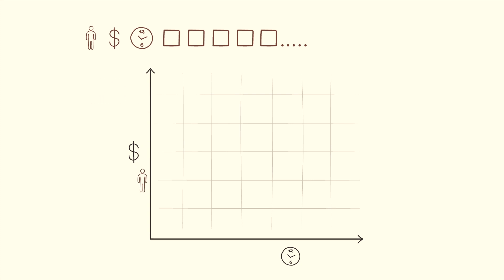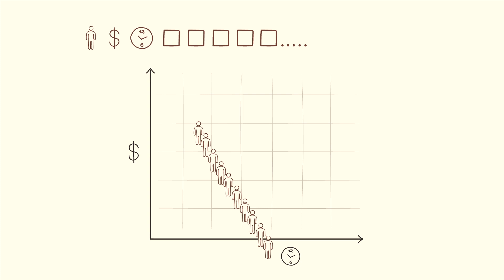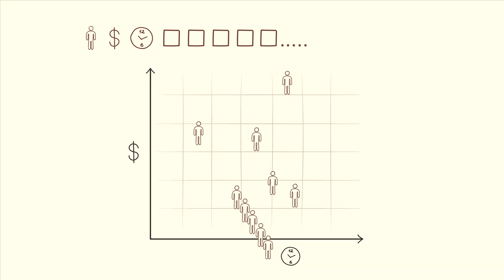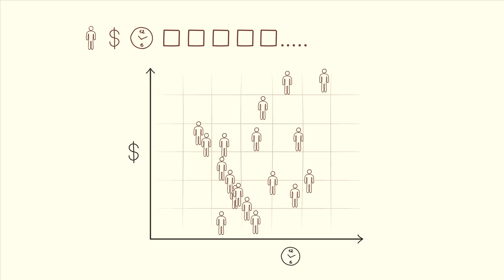We take each person and find their place on the map. For example, one person has been working for the company two years and is earning four thousand dollars a year — of course this isn't real data. Then we take all the other managers at the same type of job and find their place on the map, moving each person right for years worked and up for salary. For instance, one person earning six thousand dollars a year has worked about four and a half years. We add all the managers to build out the map.